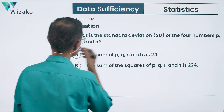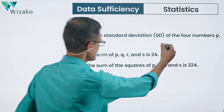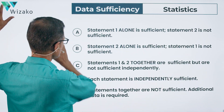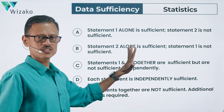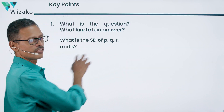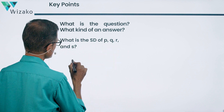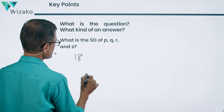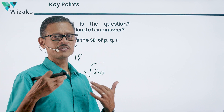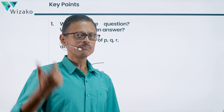What is the standard deviation of four numbers P, Q, R, and S? That's what the question asks. We should be able to say, for example, the standard deviation is equal to 18, or the standard deviation is equal to root 20. Some such specific number is what we are expected to come up with. So we are looking for a number as the answer.